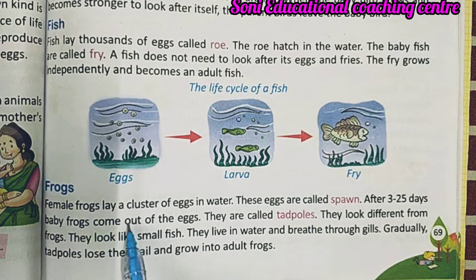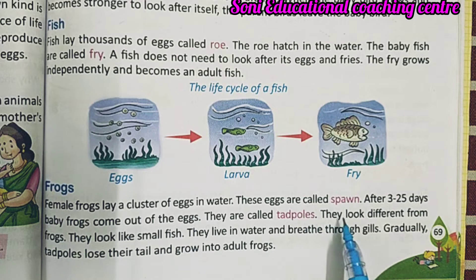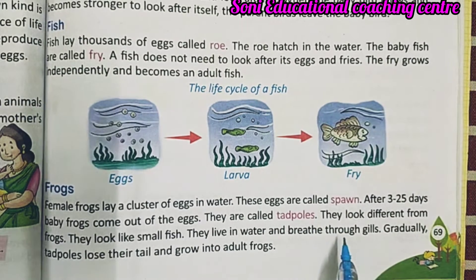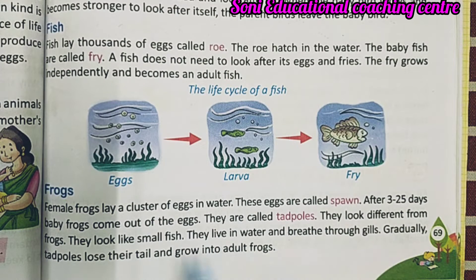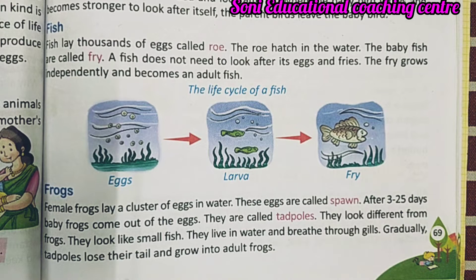Frogs: female frogs lay a cluster of eggs in water — इनके जो अंडे होते हैं उनको spawn बोला जाता है। These hatch within three to twenty-five days and baby frogs emerge. They are called tadpoles — उनको tadpole बोला जाता है। They look like small fish, live in water, and breathe through gills. Gradually, tadpoles lose their tail and grow into adult frogs — धीरे-धीरे tadpoles अपनी पूंछ को खो देते हैं और adult मेंढक बन जाते हैं।